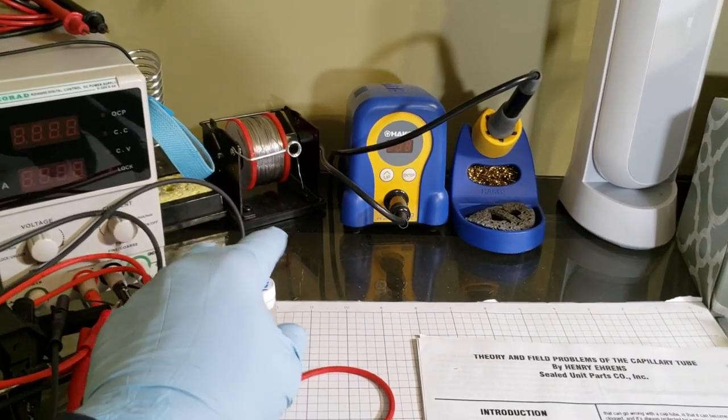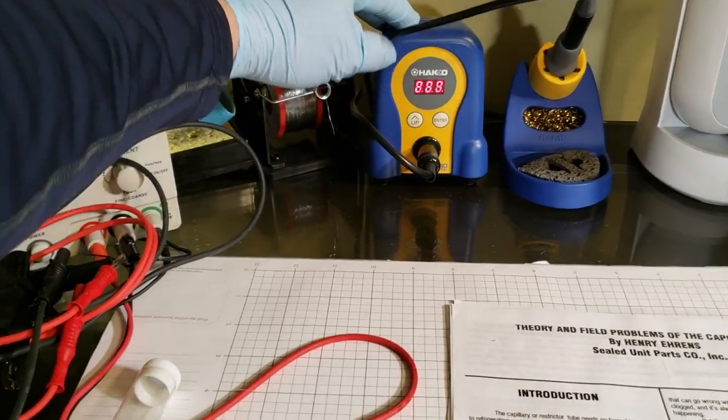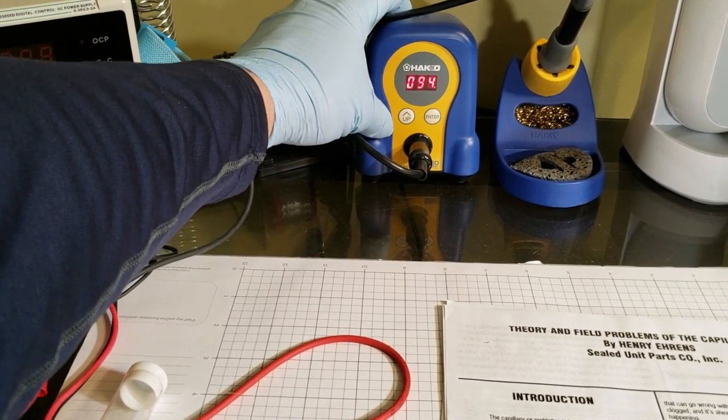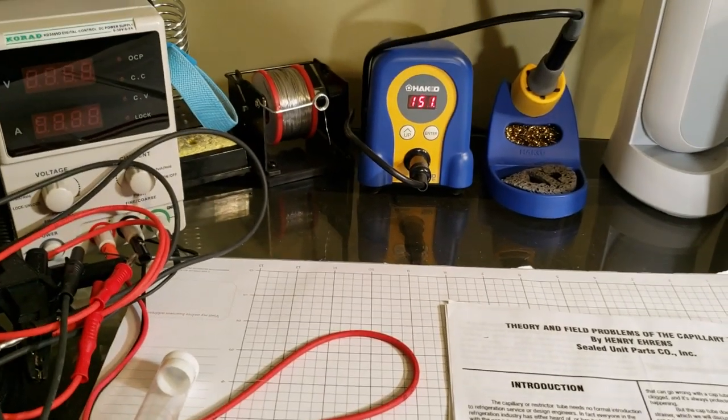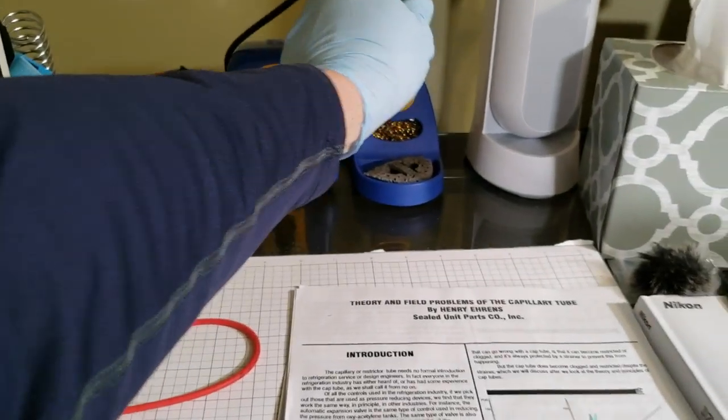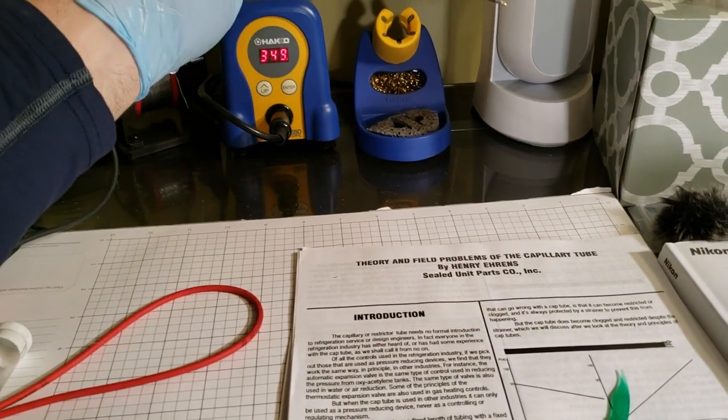I have a Hakko soldering station here. But this thing here, this is about $100 or more. You don't have to have something like that. But you can sit there and set it for whatever temperature you want. So if you're going to be doing some fancy soldering, this is definitely a nice one to do it. It's temperature regulated. But you don't have to have nothing quite that nice.